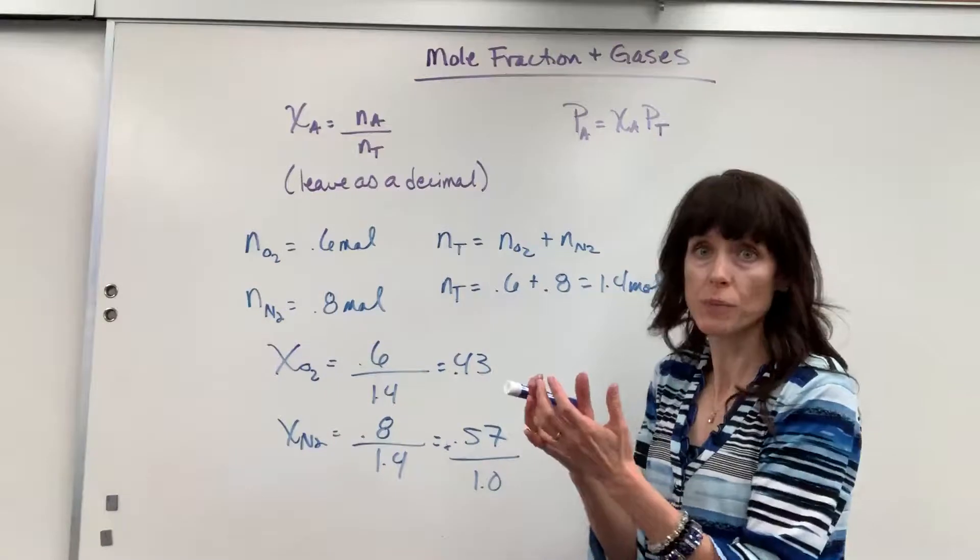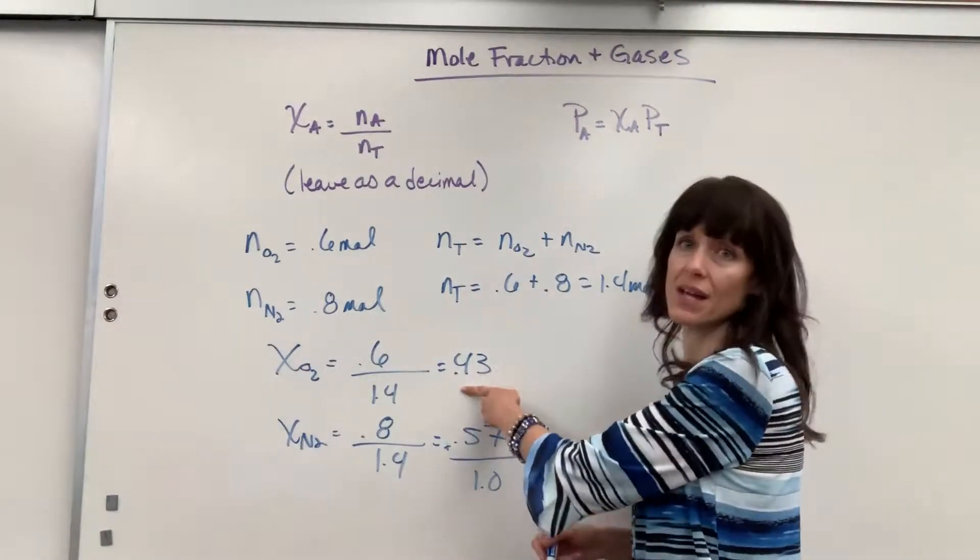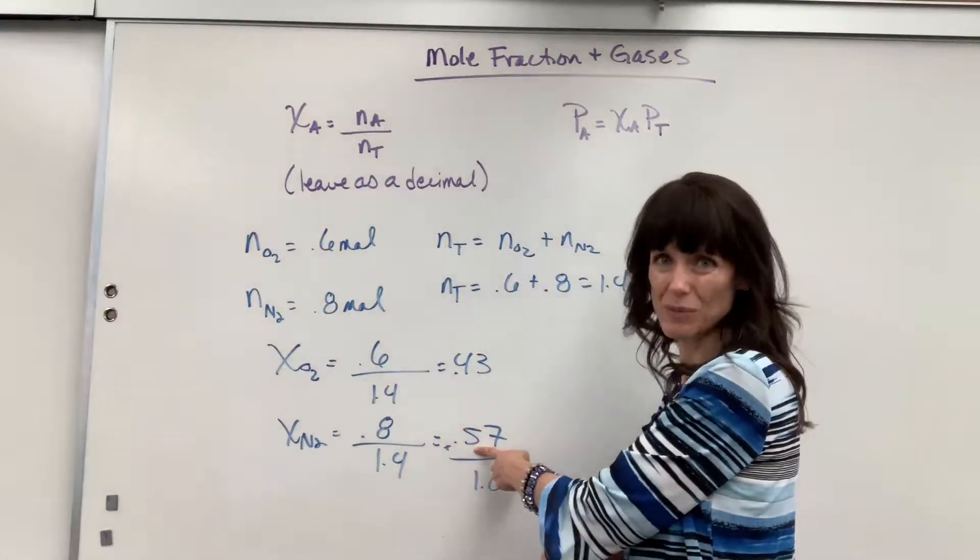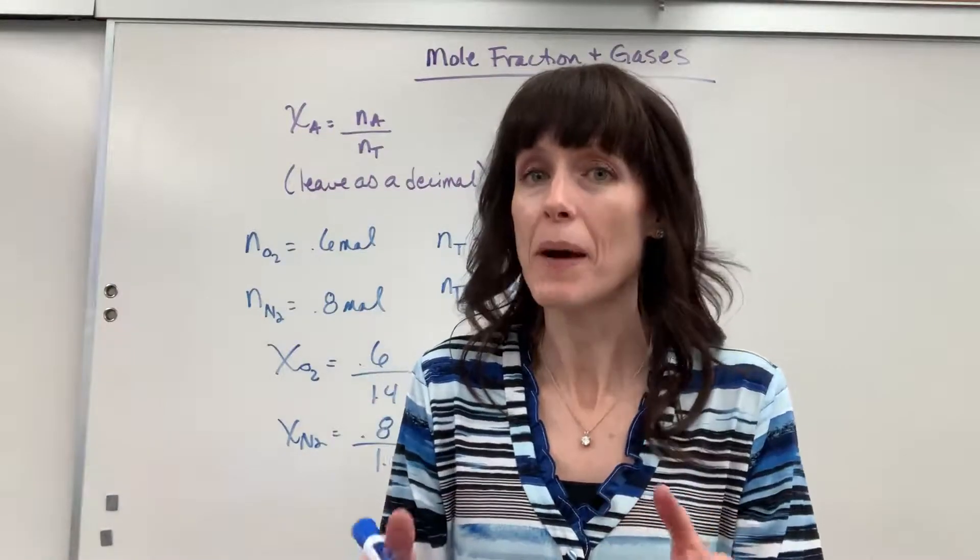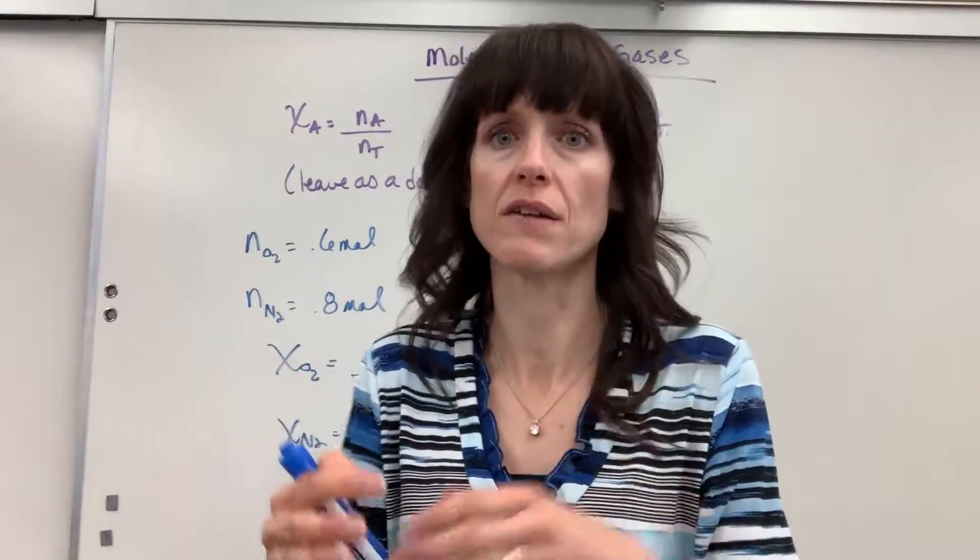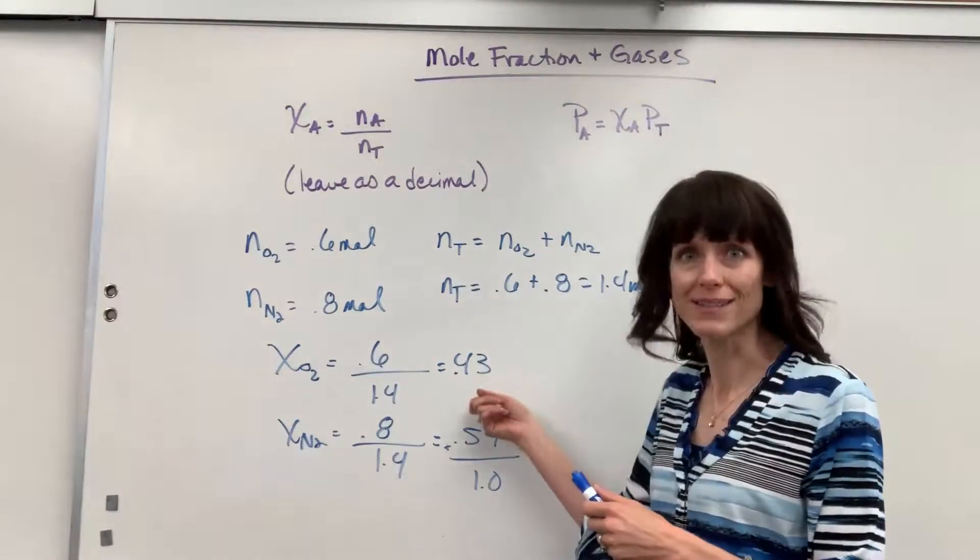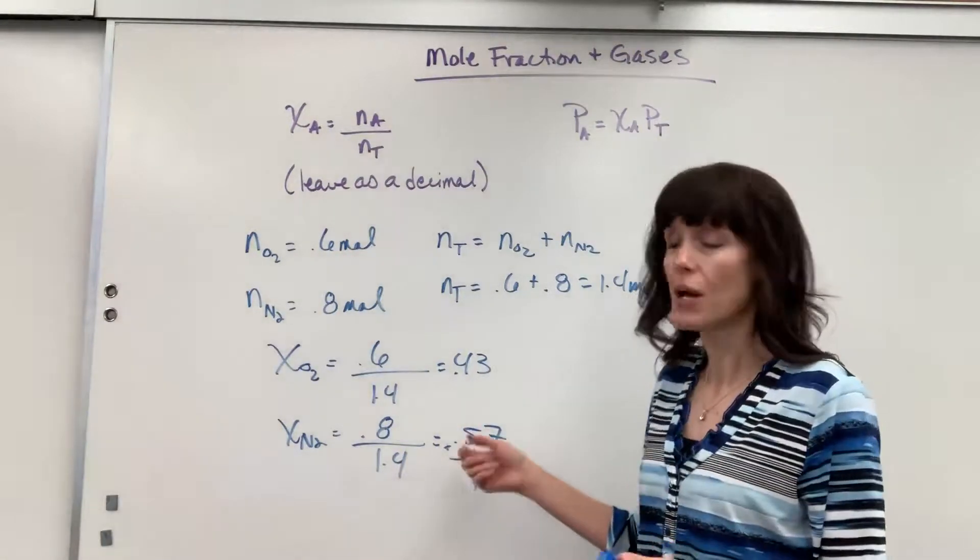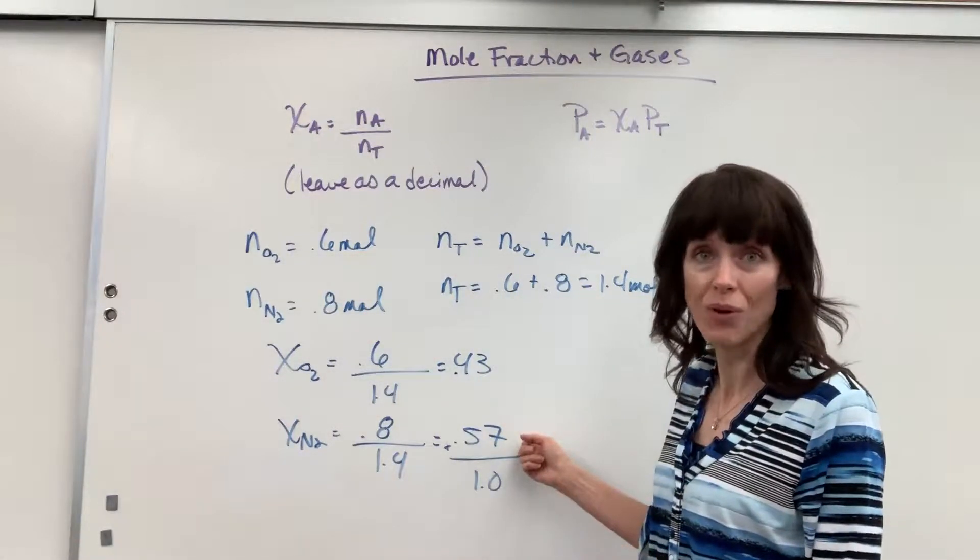Of the 100% of the moles, of the total moles, 43% of the moles are oxygen and 57% of those moles are nitrogen. So you have all these collisions happening. That means of the pressure that this container is experiencing, the collisions on the side of the wall, 43% of the pressure comes from oxygen and 57% of the pressure comes from nitrogen because of their mole fractions.